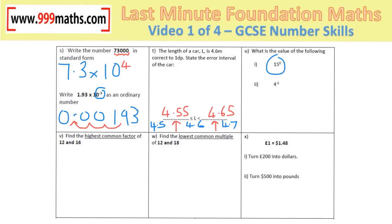Anything to the power 0 is always 1. For 4 to the minus 2: 4 squared is 16, and the minus always means put a 1 over it, giving 1 over 16.